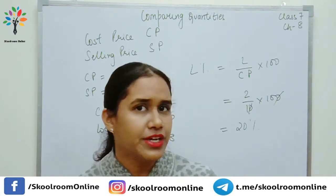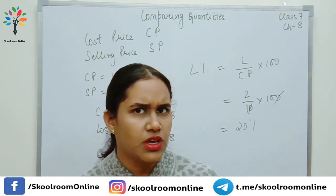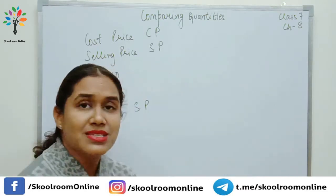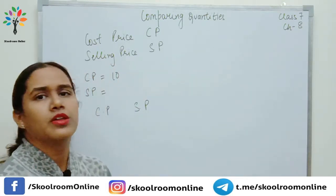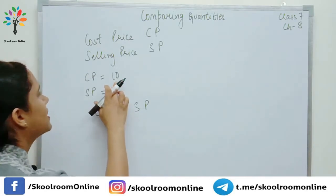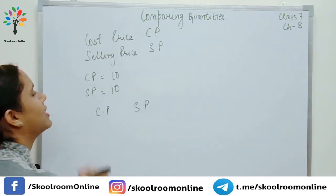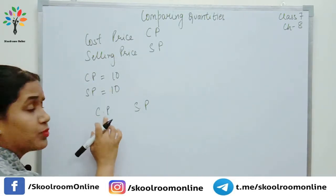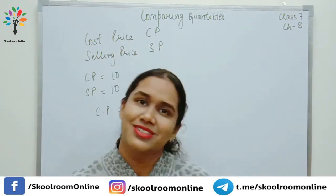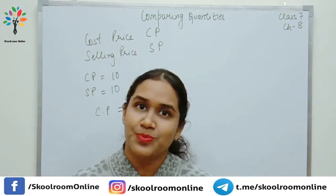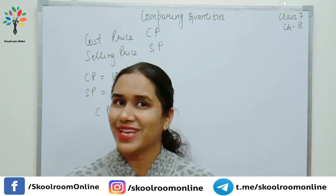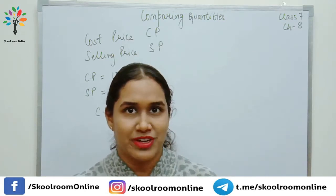यहाँ पे तीसरी condition भी हो सकती है — no profit, no loss. मैंने 10 रुपीज का खरीदा और 10 रुपीज में ही sell कर दिया, तो मेरा cost price और selling price equal है — this is the third condition. अब इन्हीं के ऊपर हम कुछ examples solve करते हैं.